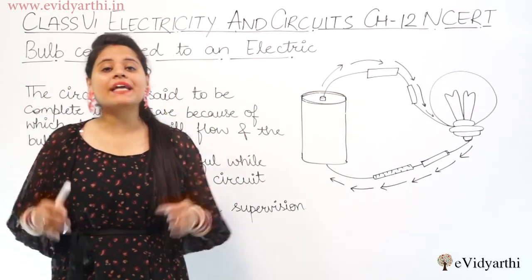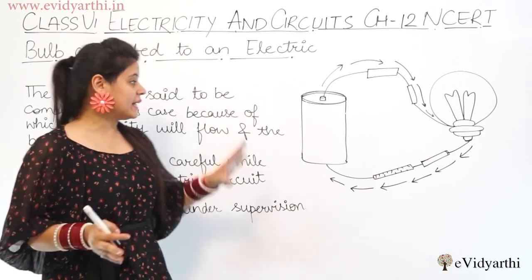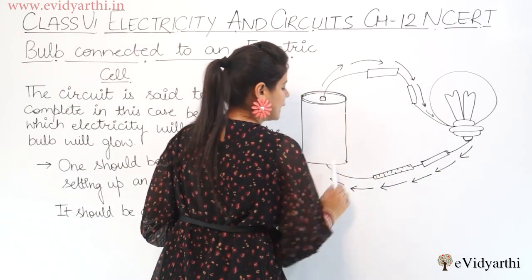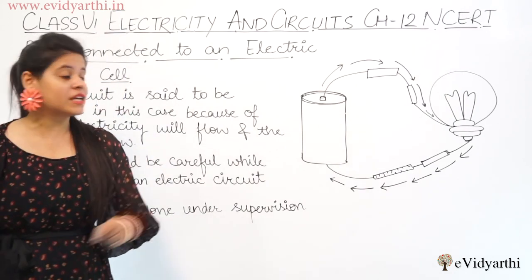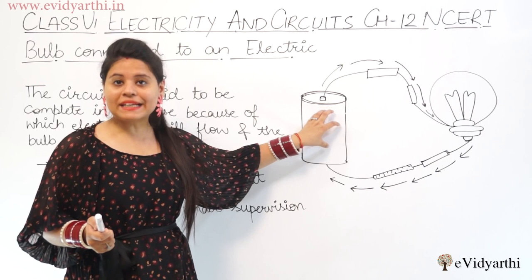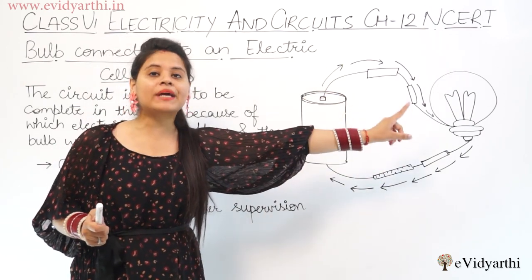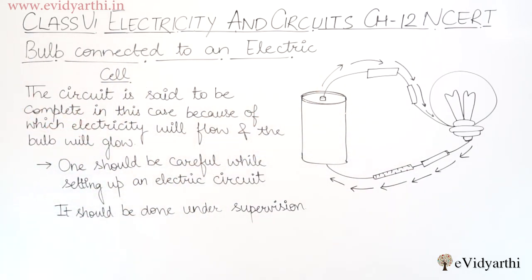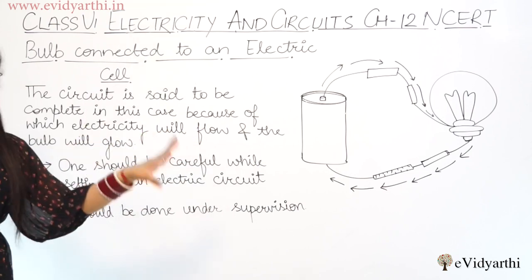In the next session, we are going to study what is a closed circuit and what is an open circuit. Now, why do we call this a circuit? Because one terminal's end is connected to the other side. When the terminals are connected through electric wires, the electric cell will produce current and it will flow or pass on, and the bulb will glow. The circuit is said to be complete in this case, because of which electricity will flow and the bulb will glow.